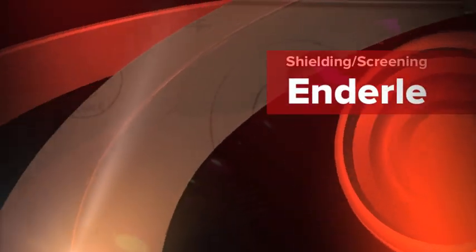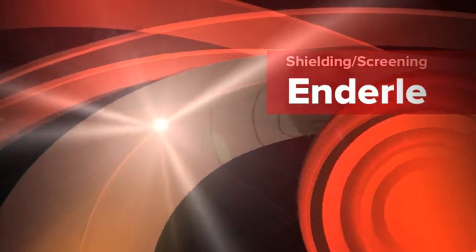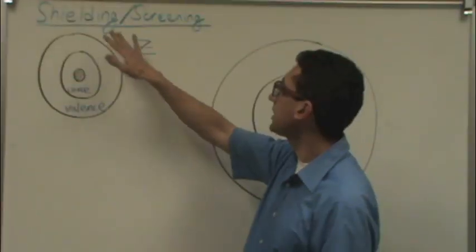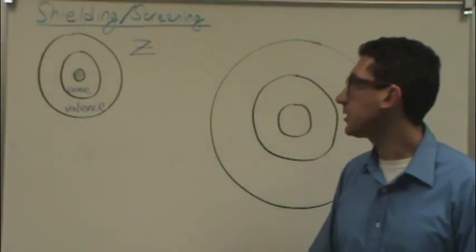We're going to get into a topic from the Periodic Table chapter that can be difficult at first glance. It's the idea of shielding or screening. It's the same thing.